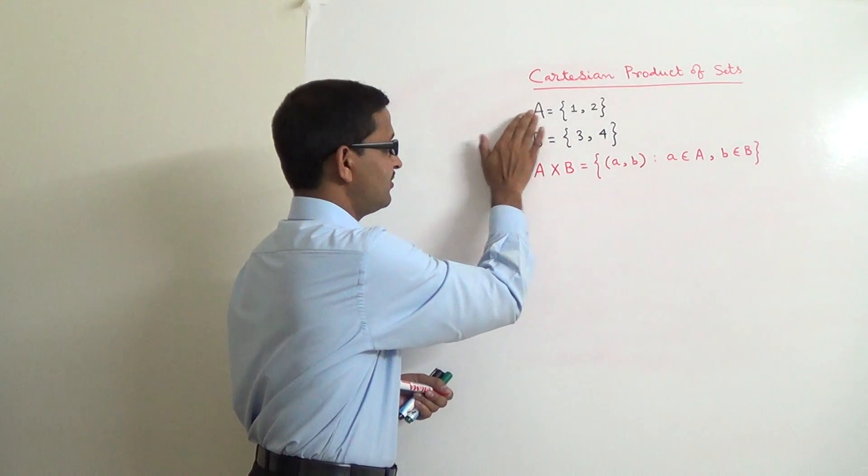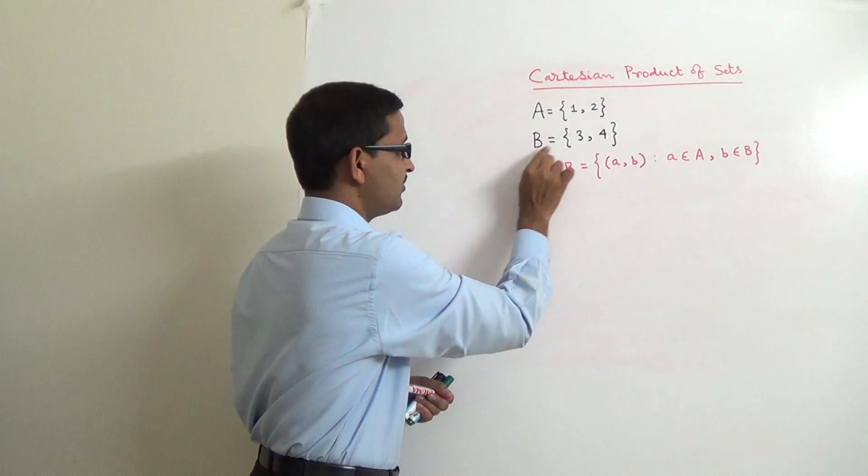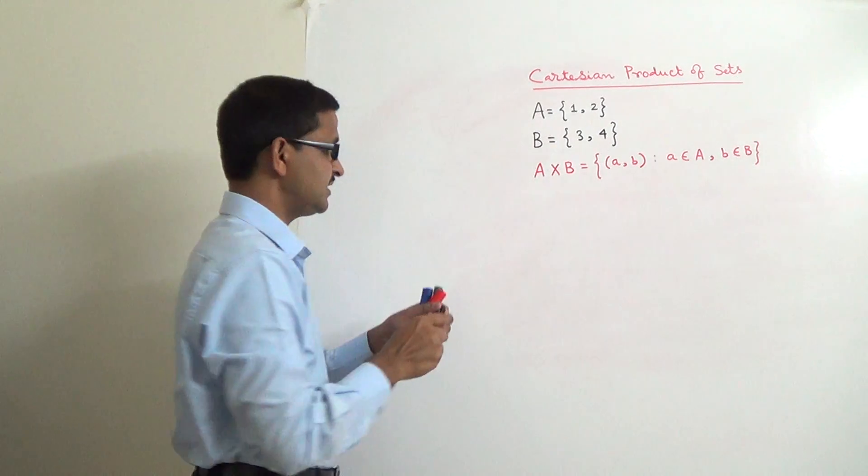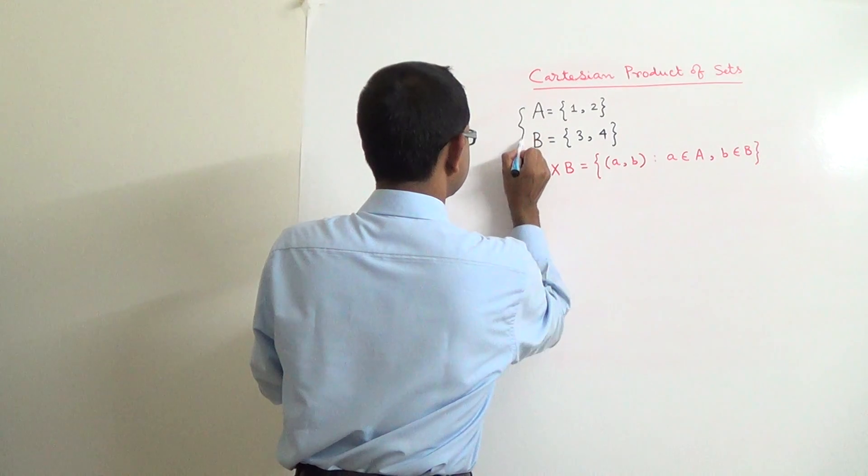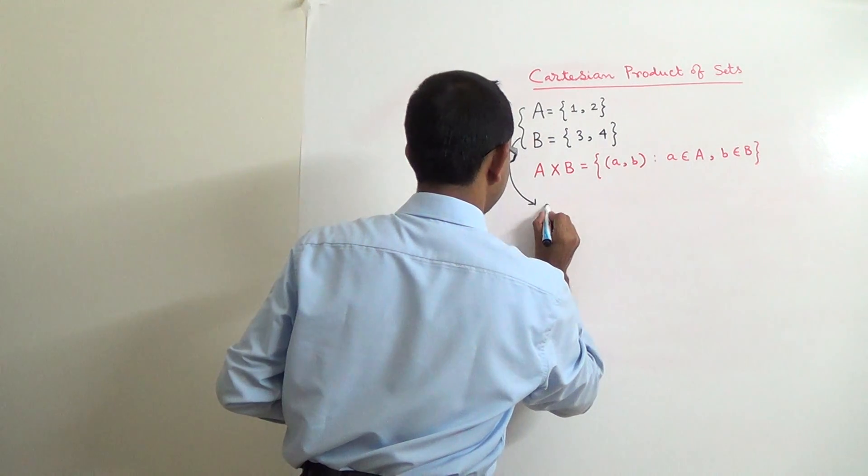Now, let's see how it actually makes sense with respect to these two examples, where the set A contains 1, 2 and the set B contains 3, 4. From these two sets, if we construct A cross B,